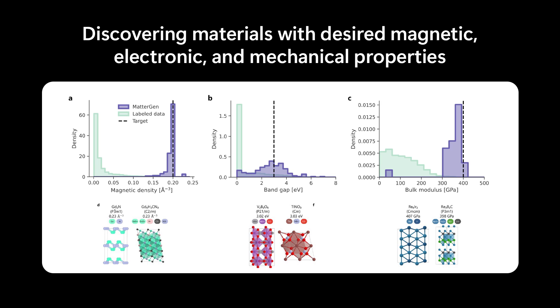MetaGen also generates materials given desired magnetic, electronic, and mechanical properties. The most impressive result here is that we can shift the distribution of generated material towards extreme values compared with training property.